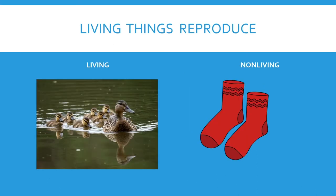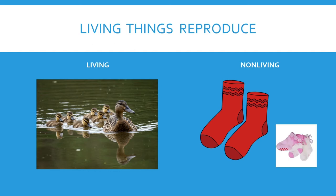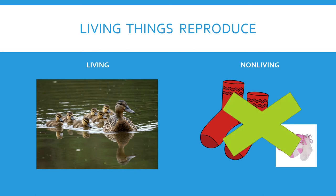The last characteristic we're going to talk about is that living things reproduce — that means they have babies. I see a mother duck in the water with her baby ducklings. They must be living things; they're also moving in the water. If you look at the pair of socks, they don't have baby socks — man makes these socks if you want more. So they are non-living things.